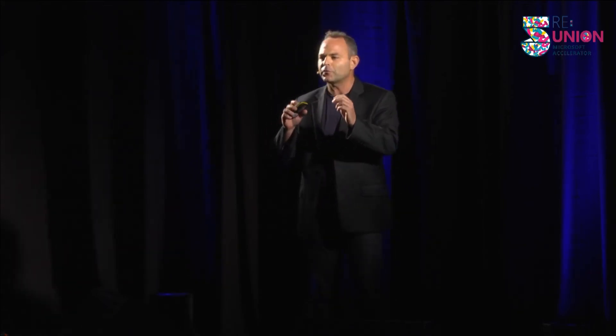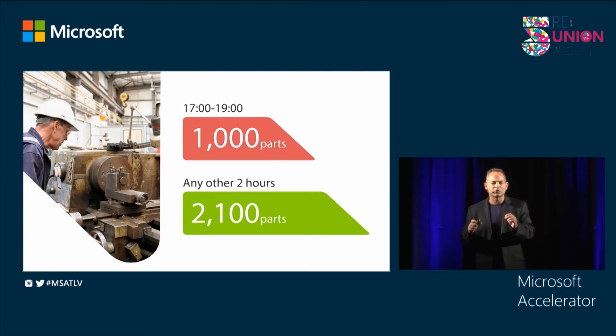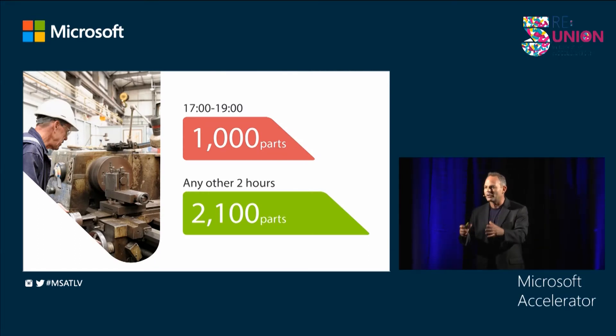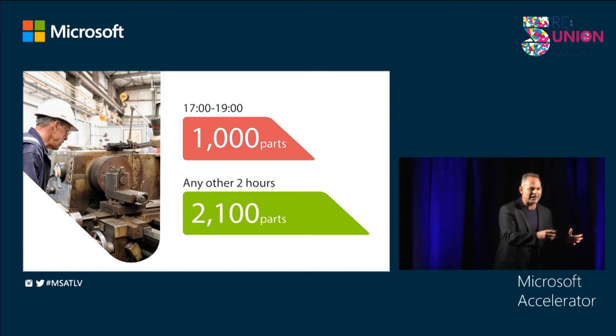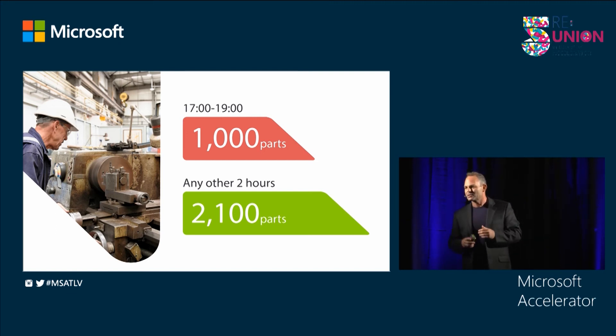At the same work cell, our system also highlighted that on average they produce every couple of hours 2,000 parts, while between 5 and 7 they produce half of that. What happens at 5 o'clock? There's a sandwich break. So now before going on his sandwich break, the operator must verify that the buffer in front of the machine is full with parts, so that when he returns from his break, the machine will continue to run and will not stop after 10 minutes.